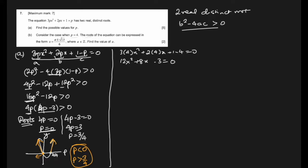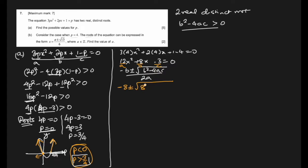Using the quadratic formula x = (-b ± √(b² - 4ac)) / 2a, with a = 12, b = 8, c = -3: we get x = (-8 ± √(64 + 144)) / 24. That is (-8 ± √208) / 24. Now, 4 × 12 = 48, and 48 × 3 = 144, so 64 + 144 = 208.